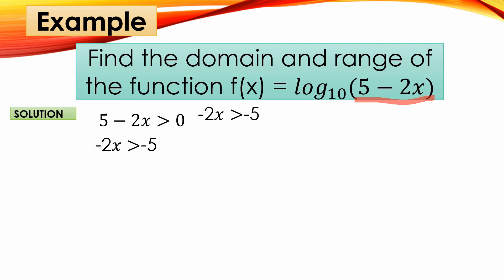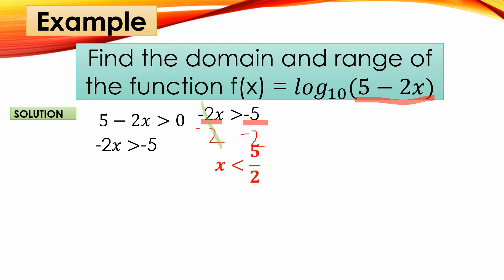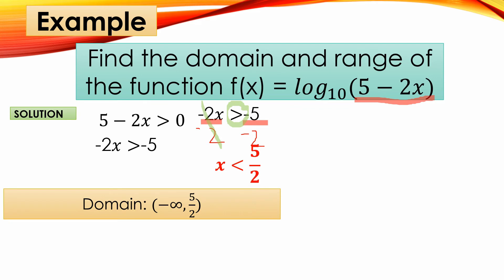Next, divide both sides by negative 2. Negative 2 divided by negative 2 gives x, and negative 5 divided by negative 2 gives positive 5/2. Remember, when we divide both sides by a negative number, the inequality symbol flips — from greater than to less than. So x < 5/2, meaning the domain is from negative infinity to positive 5/2.